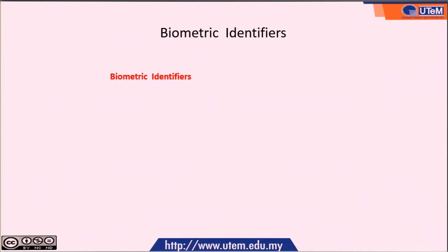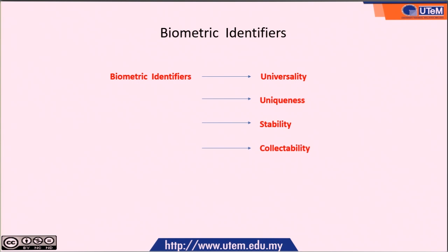So what is a biometric identifier? It can be characterized by universality, uniqueness, stability, collectibility, performance, acceptability, and it must also have forged resistance.